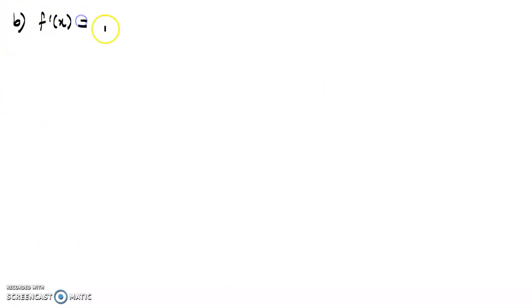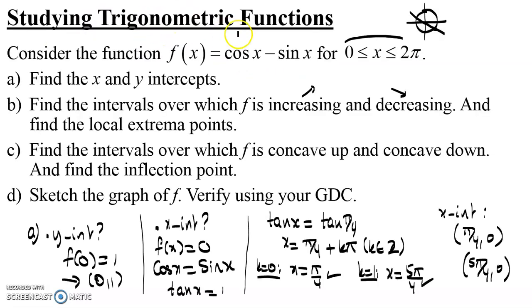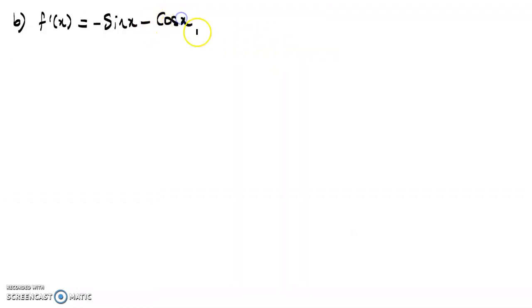For Part B, we start by finding f'(x). Since f(x) = cosine x − sine x, the derivative of cosine is −sine x, and the derivative of sine is cosine x, giving f'(x) = −sine x − cosine x. To study its sign, we first determine its roots, since the sign of an expression changes around its roots.